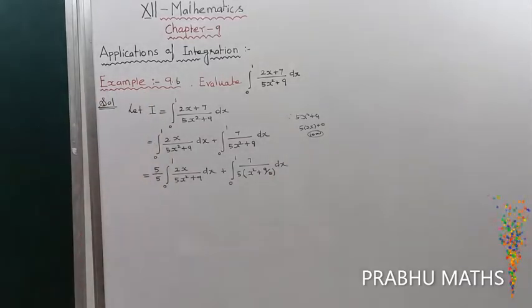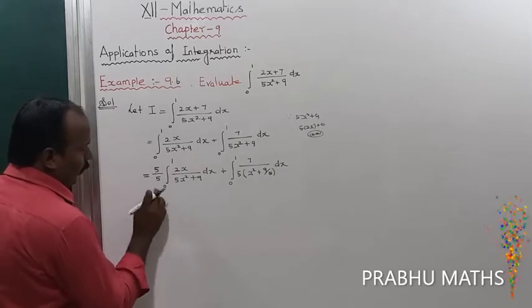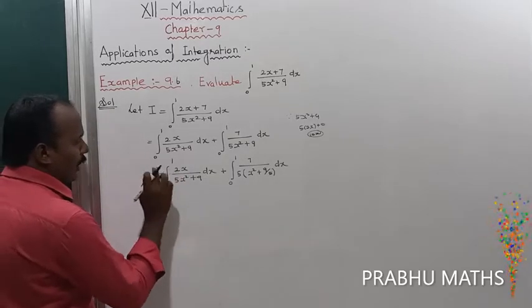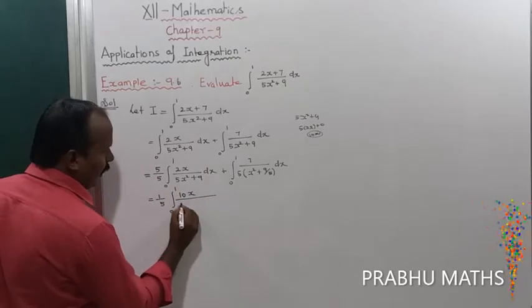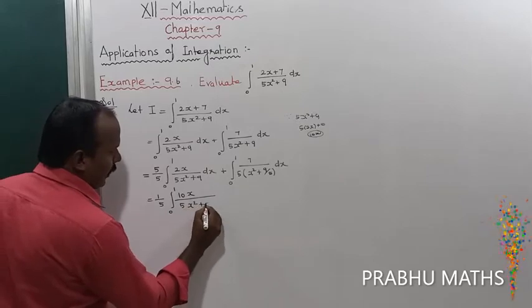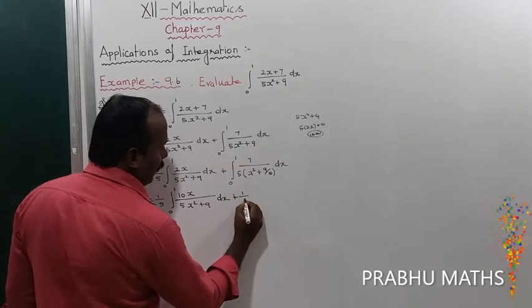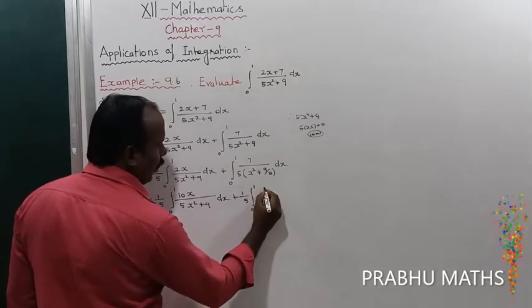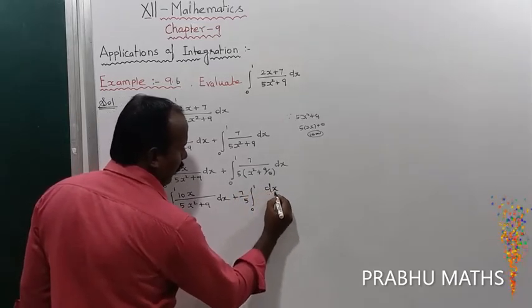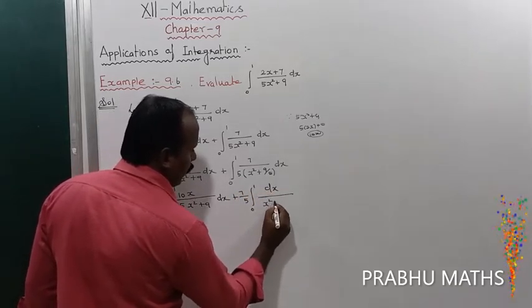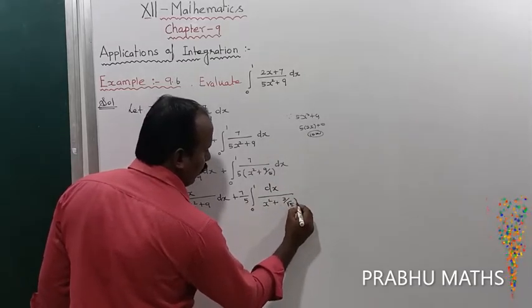Next step: that is equal to (1/5) · ∫₀¹ (10x)/(5x² + 9) dx, plus (7/5) · ∫₀¹ dx/(x² + 9/5).